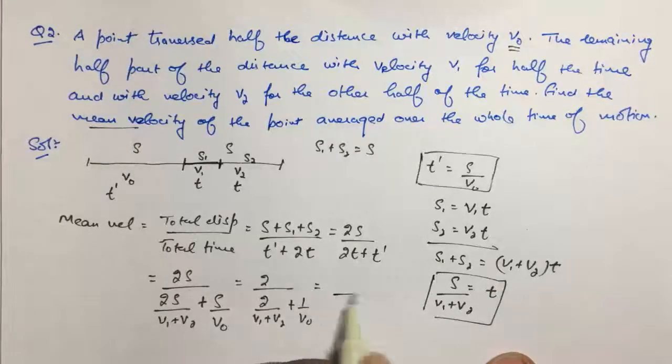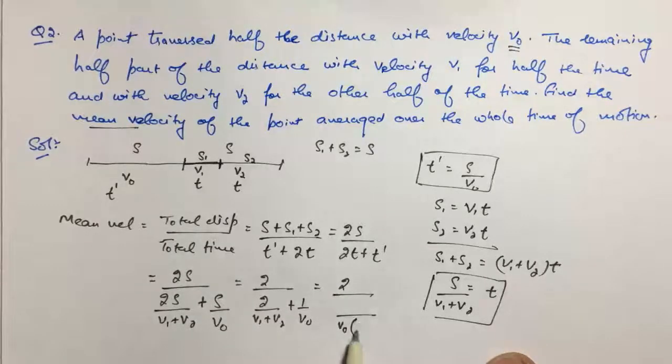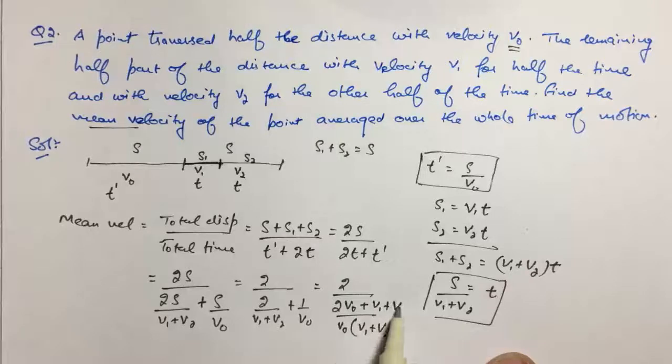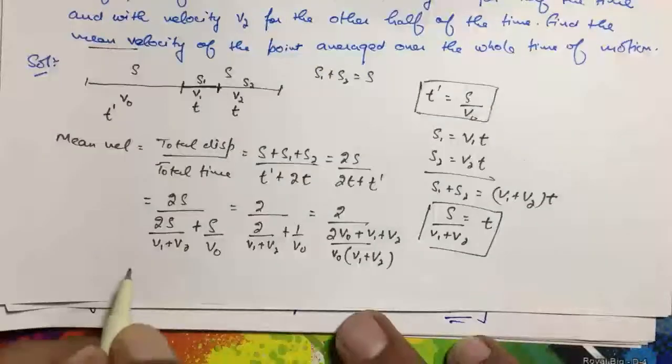When we solve this, we get V₀ and (V₁ plus V₂) as LCM, and here we get 2V₀ plus V₁ plus V₂.